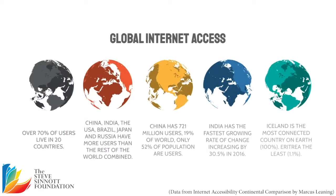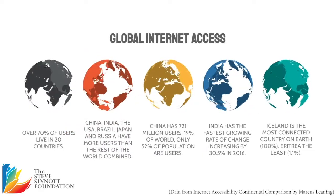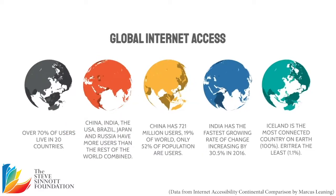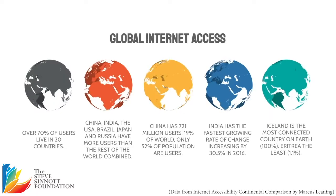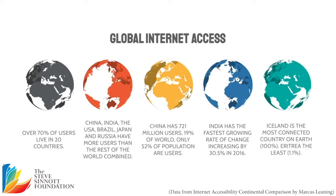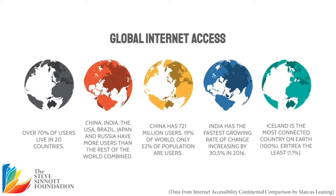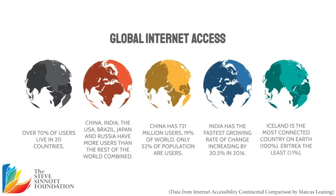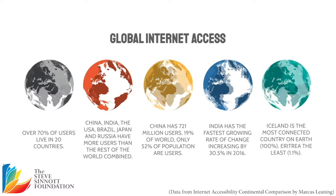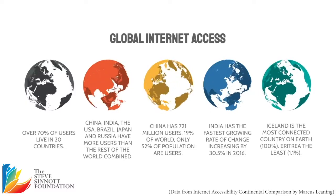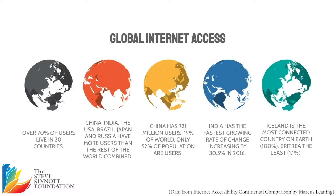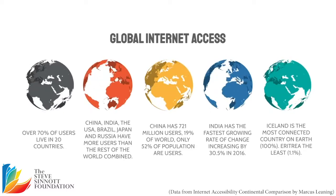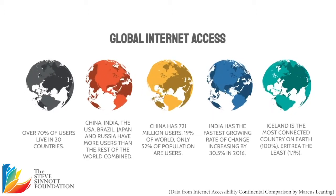Internet access is necessary to thrive and access education, but not everyone has equal access to it. Over 70% of internet users live in just 20 countries, and China, India, the USA, Brazil, Japan and Russia have more users than the rest of the world combined.